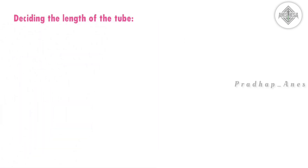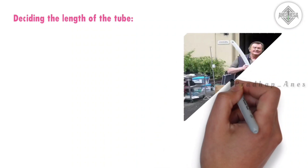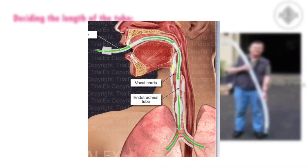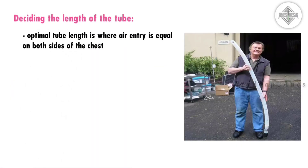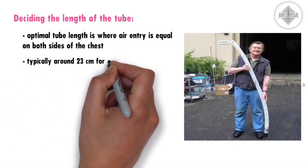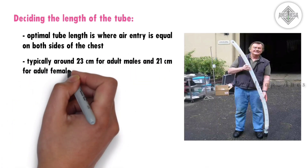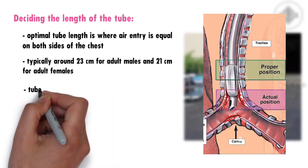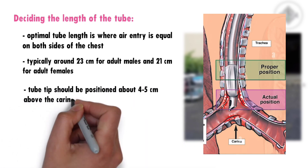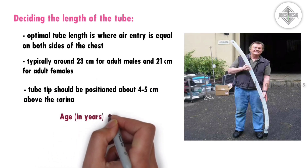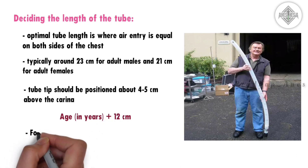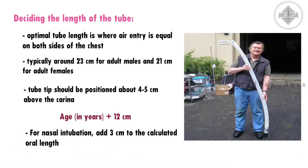Deciding the length of the tube. For adults, the optimal tube length is where air entry is equal on both sides of the chest — typically around 23 cm for adult males and 21 cm for adult females. The tube tip should be positioned about 4 to 5 cm above the carina, roughly 26 to 28 cm from the incisors. In children, the length of an oral tube can be calculated using the formula: age (in years) + 12 cm. For nasal intubation, add 3 cm to the calculated oral length.